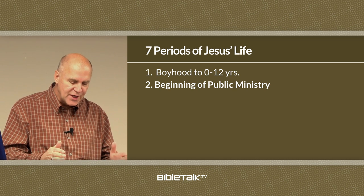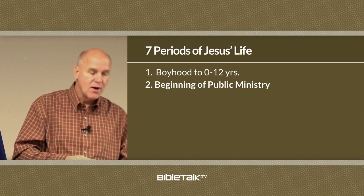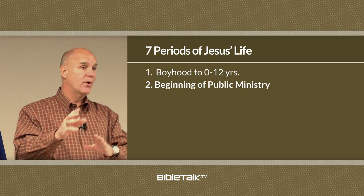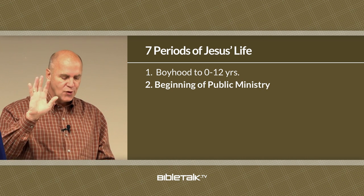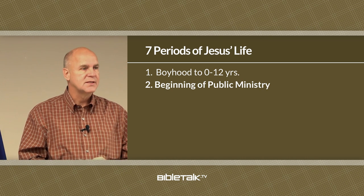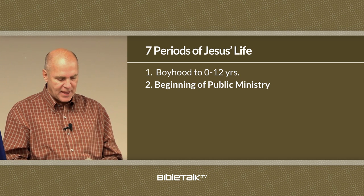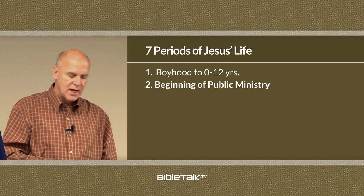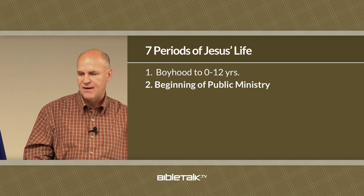The second period of His life is the beginning of His public ministry. At the age of 30, Jesus leaves His obscure life in Nazareth — where He lived as a boy — and Capernaum, where He lived as an adult, in the northern region. He travels south to begin His public ministry in and around Jerusalem. This debut is spectacular and includes His meeting with John the Baptist.